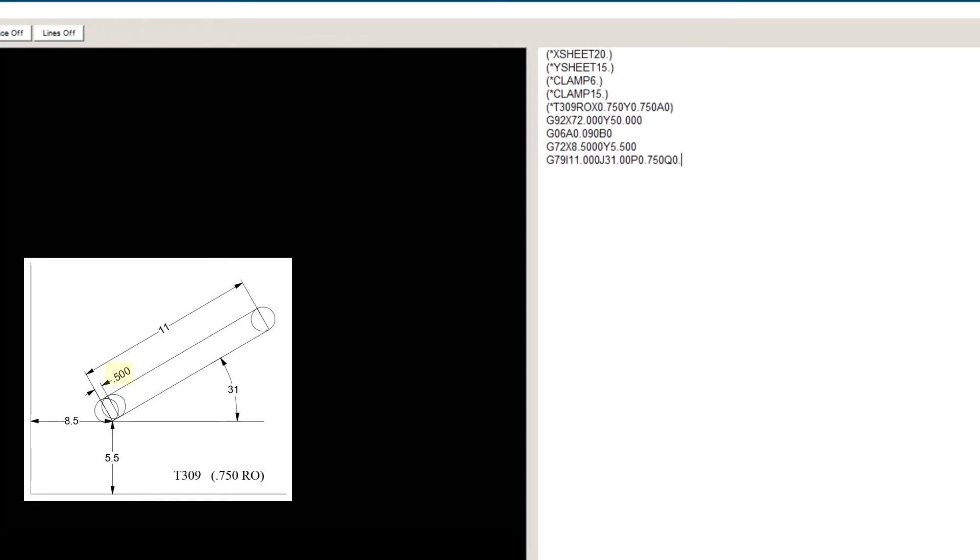Q0.5, which is the pitch or center to center of hits. D0.090, which is the material thickness. T309, which is the station number.